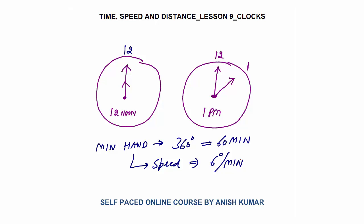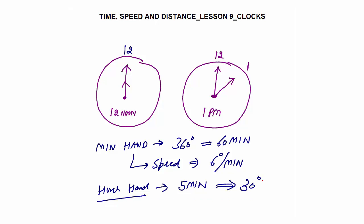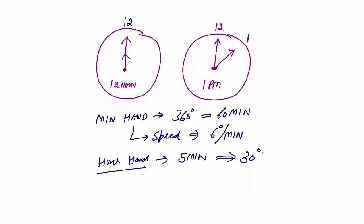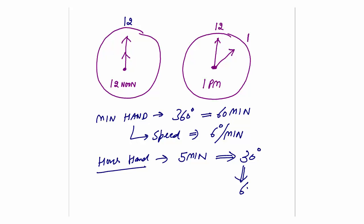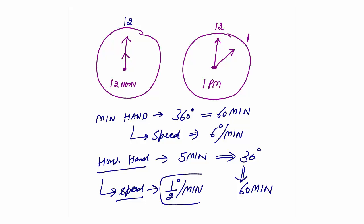In 1 minute the minute hand covers 6 degrees, in 2 minutes it covers 12 degrees, and in 60 minutes it covers 360 degrees. For the hour hand: from 12 noon to 1 p.m. it moves only 5 minutes on the dial, which is 30 degrees, in 60 minutes. So the speed of the hour hand is 30 degrees per 60 minutes, which equals half a degree per minute.